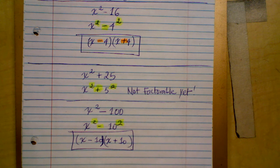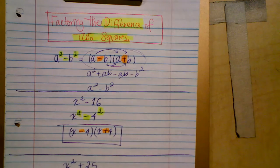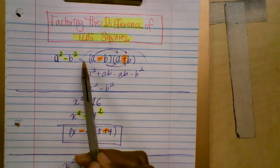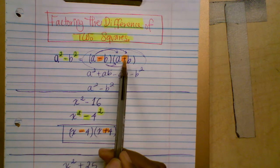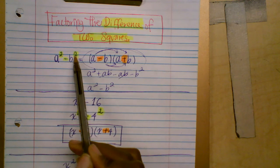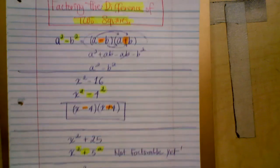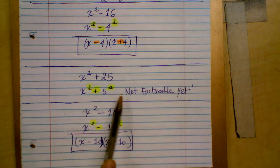Thank you for listening. I hope this video was beneficial. Remember how to use the formula for the difference of two squares: it has to be a difference, not a sum. Write two factors, and inside each factor make sure one has a minus sign and the other has a plus sign. Rewrite each term without the square. It only works for the difference, not the sum — like X squared plus 25 cannot be factored this way. Thank you, bye!